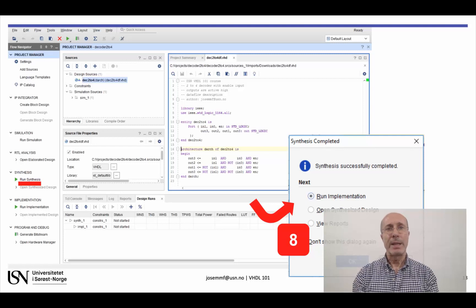We are now ready to select the Run Synthesis operation on the Project Manager window on the left. If there are no syntactical errors, the result of this operation will display as shown on the right. The absence of syntactical errors does not mean that the circuit will do what we want.